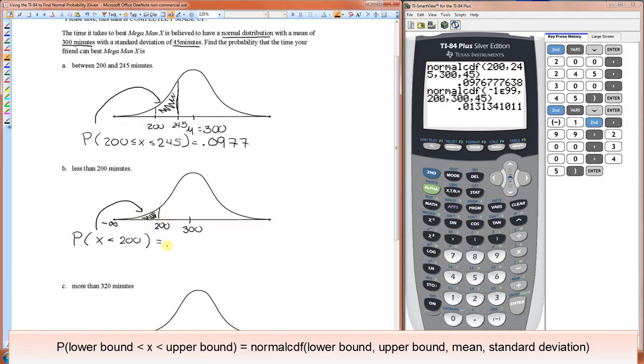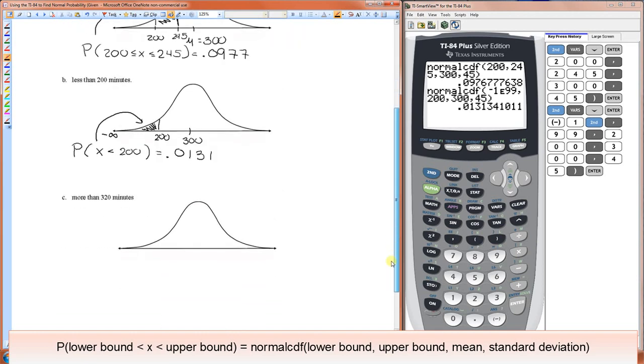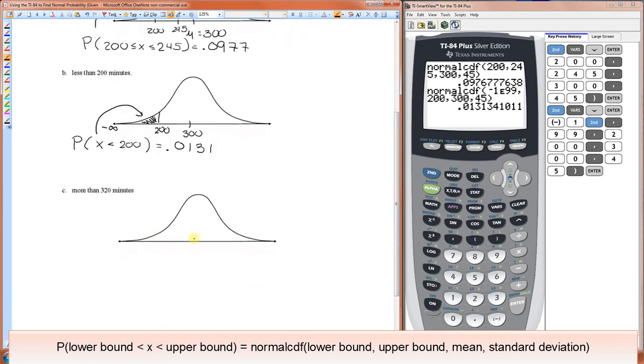So it's going to be 0.0131. This one is more than 320 minutes. So once again, the mean is 300. 320 is probably somewhere around here. So we're looking for this area in here.